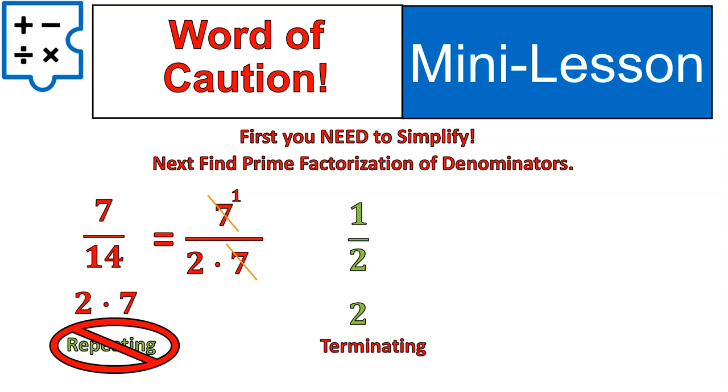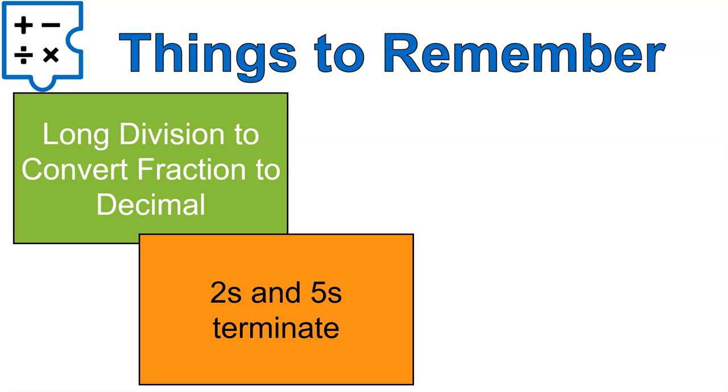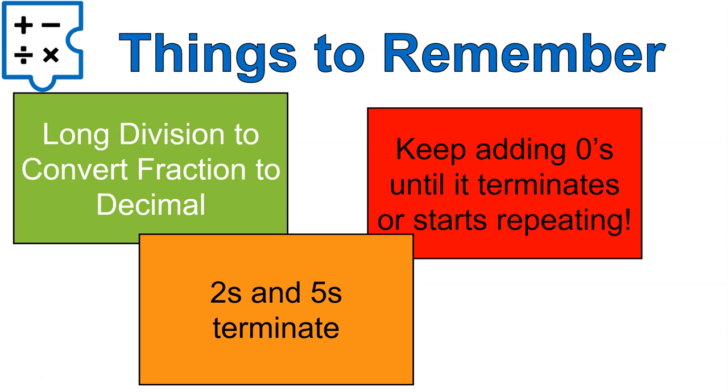Again, the shortcut's not the most helpful shortcut in the world, but I wanted you to be aware of it. All right, a couple things to remember: Long division, you use it to convert fractions into decimals. We talked about two different types of decimals, repeating and terminating. Terminating decimals are ones that have prime factors of 5s and 2s. And if you're doing this using long division, keep adding those 0s until you recognize that it either terminates or it starts repeating. I hope that video was helpful for you. Have a wonderful day. Bye.